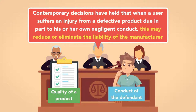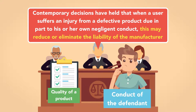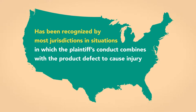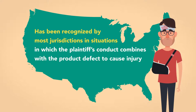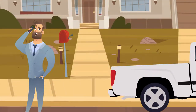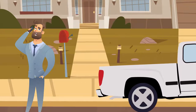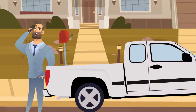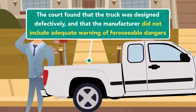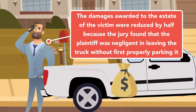However, contemporary decisions have held that when a user suffers an injury from a defective product due in part to his or her own negligent conduct, this may reduce or eliminate the liability of the manufacturer. This defense has been recognized by most jurisdictions in which the plaintiff's conduct combines with the product defect to cause injury. One case in which the plaintiff's negligence was deemed sufficient to serve as a defense to products liability involved a pickup truck that rolled backwards and struck the driver who had gotten out of the truck. The court found that the truck was designed defectively and that the manufacturer did not include adequate warning of foreseeable dangers. However, the damages awarded to the estate of the victim were reduced by half because the jury found that the plaintiff was negligent in leaving the truck without first properly parking it.